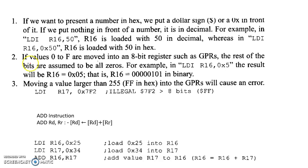If we want to present a number in hexadecimal, we put a dollar sign or 0x in front of it. If we put nothing in front of a number, it is in decimal. Register 16 is loaded with 50 in decimal. Whereas in LDI R16, 0x50, the 16th register is loaded with 50 in hexadecimal.